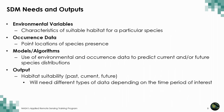There are two primary types of inputs to SDMs. The environmental variables, such as temperature or land cover, are characteristics of suitable habitat for a particular species, and many of these can be provided using remote sensing data. The environmental variables are then linked with occurrence data or known point locations where species have been found. Some models also use absence data, but this is more limited. This information is fed into a statistical model to produce maps of habitat suitability, which can be based on past, current, or future scenarios.